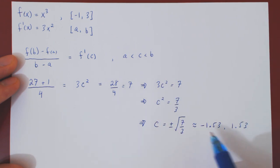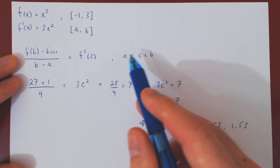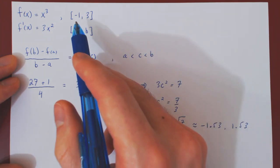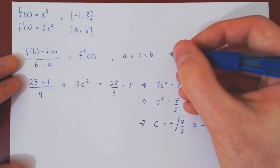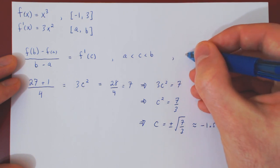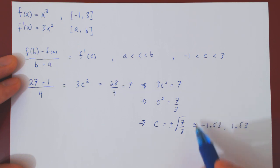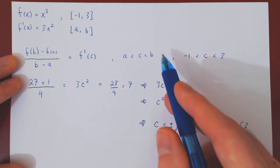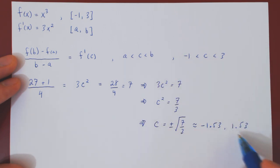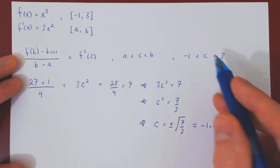But recall that c has to be between a and b. Well, here, a and b are negative 1 and 3, respectively, so c must be somewhere between negative 1 and positive 3. This value is outside of this range, so the unique solution, in this case, will be c about 1.53.